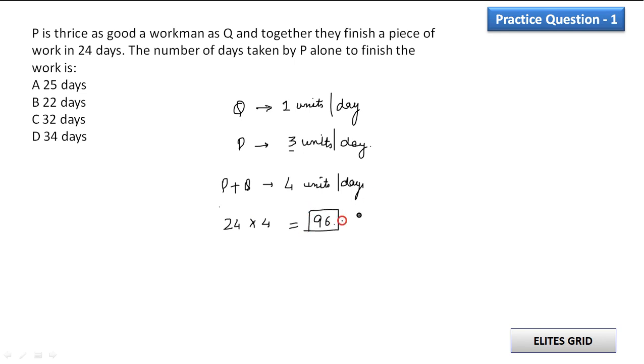So this is the total work, total work is equal to 96. Now number of days taken by P alone, P alone means 3 units per day. So if P alone is going to work, then how many days will be there? That will be 96, the total number of units divided by the number of units covered by P in a day, that is equal to 3. So total number of days will come out to be 3s are 9, 3 2s are 6, so it will be equal to 32 days.